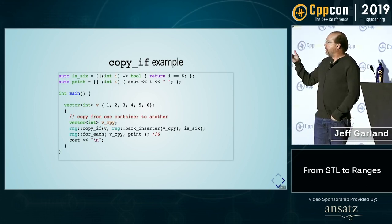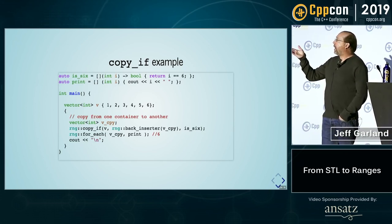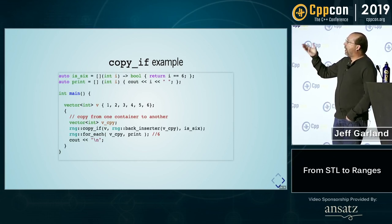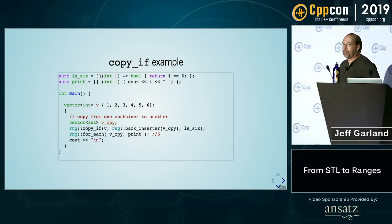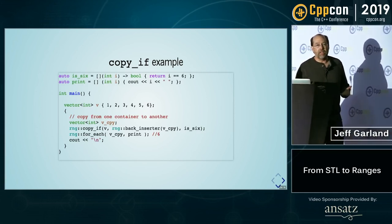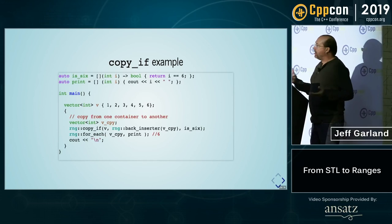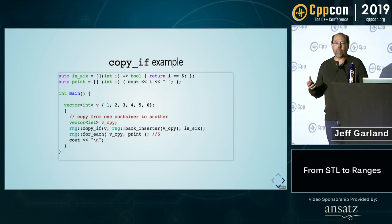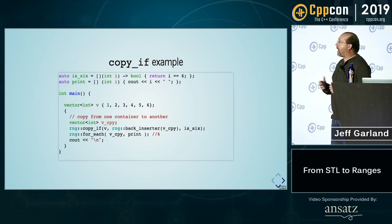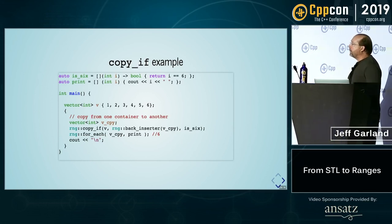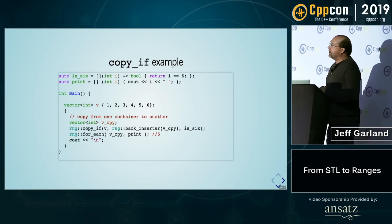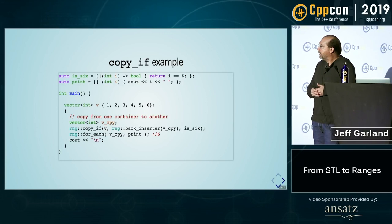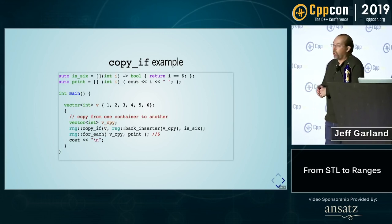Copy is again very much the same as the standard algorithm today. You have copy_if, you pass it the vector — that's the range it gets — and then you use the range back_inserter. The theme you're seeing here is that things you've seen in STL for 20 years are still there, they're in a new namespace, but they operate very much the same. Here we're doing a copy into the v_cpy vector and then printing it out.